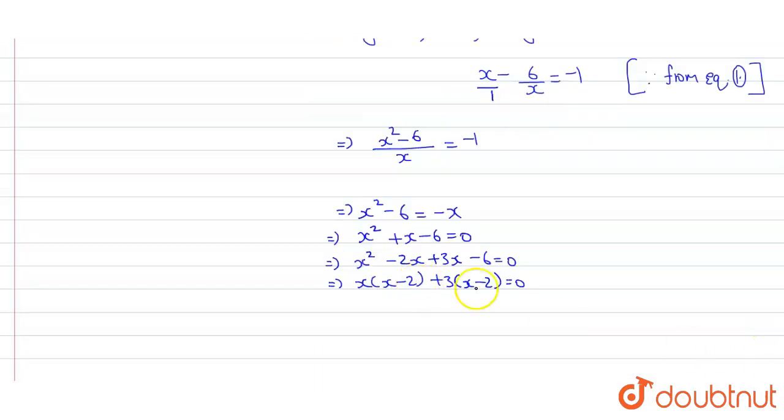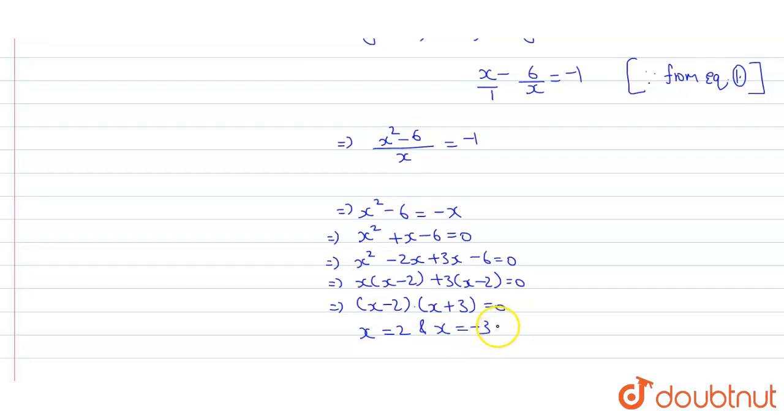x minus 2 is common, so x minus 2 times x plus 3 equals 0. Therefore, x equals 2 and x equals minus 3. x equals minus 3 is rejected, so the value of x is 2.